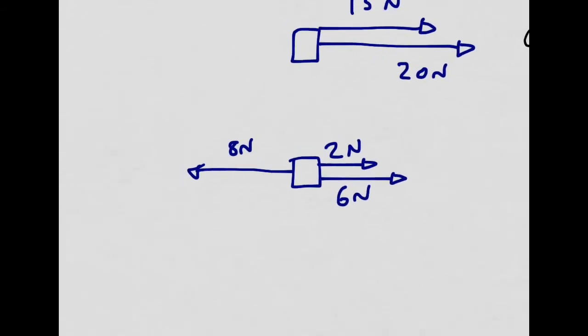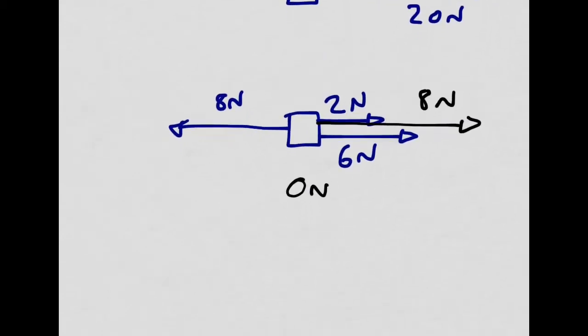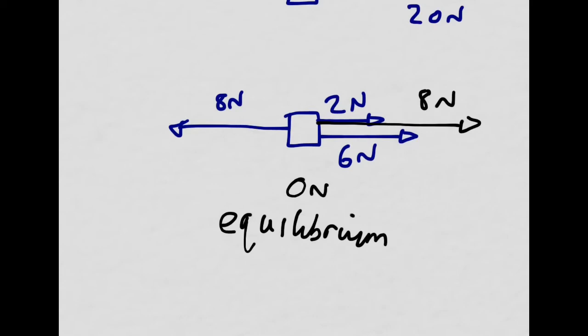This one is a little bit more complicated. In this case, I have to add together the two that are acting in the same direction. So 2 plus 6 gives me 8 newtons. Then I subtract the one acting in the opposite direction — 8 newtons — and I get a resultant force of 0 newtons. This is an interesting case because these forces are balanced. A better way of saying the forces are balanced is to say they are in equilibrium. When forces acting on an object are in equilibrium, the forces are balanced and there is no resultant force.